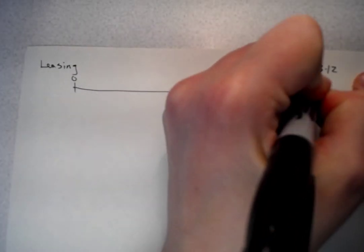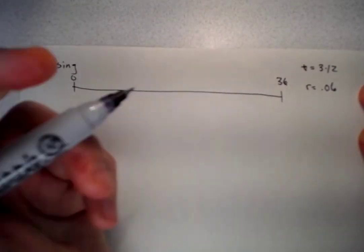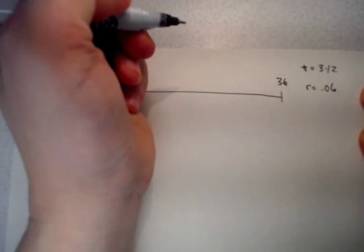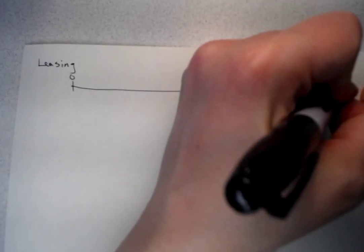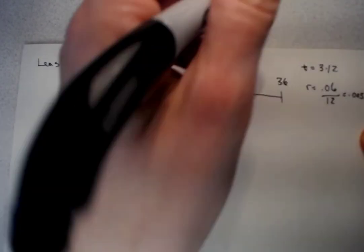The interest rate that we're given is 0.06%, but that is a yearly interest rate, and our payments are on a monthly basis. So we're going to divide by 12 and get 0.005 as the interest rate.